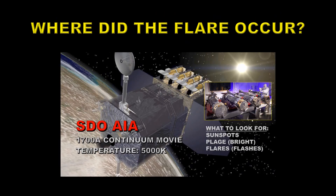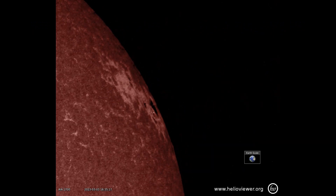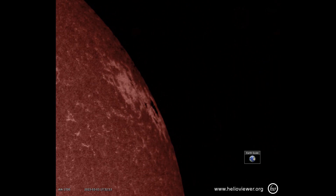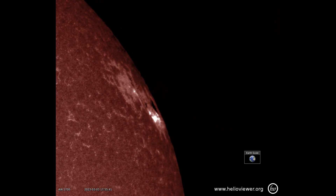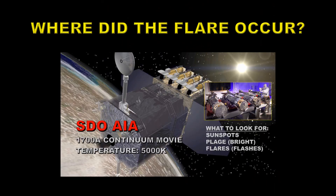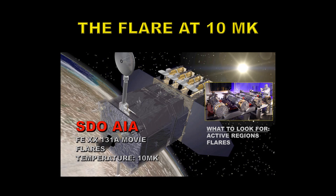Let's find out where the flare came from. To do that we're going to use the 1700 angstrom continuum movie from the Solar Dynamics Observatory AIA instrument. This shows both the sunspots and the flare locations at the same time, so it's a very useful channel. It looks like the flare was just from behind the large spot just going over the limb.